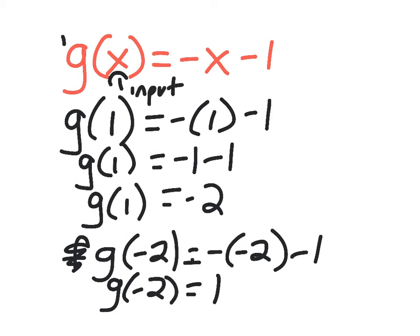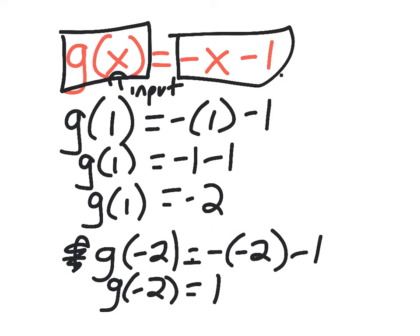Input, and this entire thing is my output. So my input is x, my output is g of x, which in this case is this.